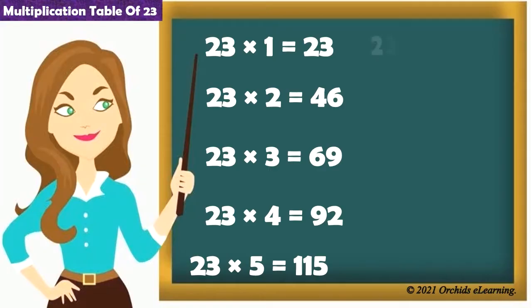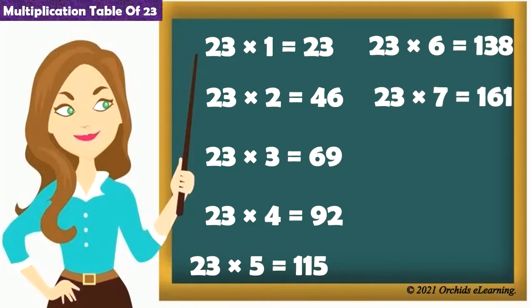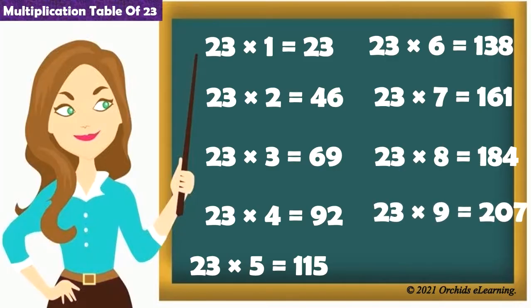23 6s are 138. 23 7s are 161. 23 8s are 184. 23 9s are 207. 23 10s are 230.